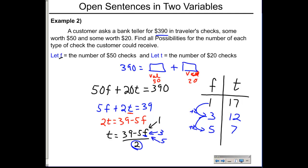If we try F = 9, then 9 × 5 = 45, and 39 − 45 gives a negative result, so we can't go further. The possible combinations are all listed in the table: (1,17), (3,12), (5,7), and (7,2) for ($50 checks, $20 checks).